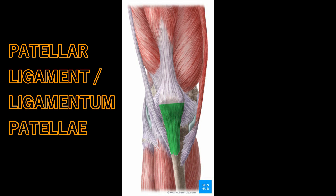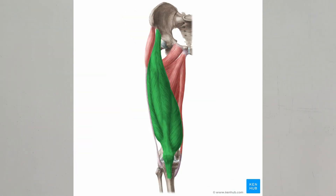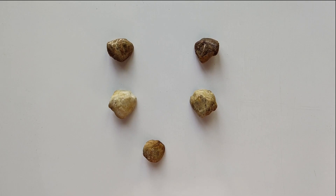From the patella, the insertion continues to the tibial tuberosity via the patella ligament or patella tendon. The patella tendon connects the apex of the patella to the tibial tuberosity and improves the way the quadriceps muscle pulls on the tibia. The quadriceps femoris tendon is the common tendon by which the four component muscles insert to the base of the patella.